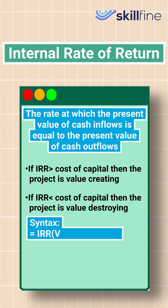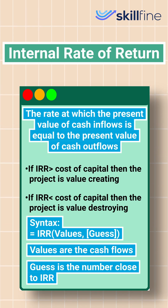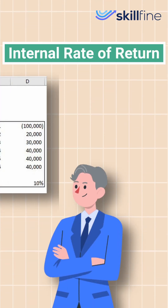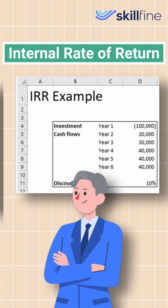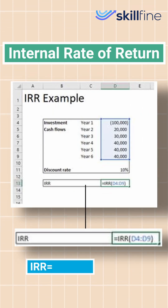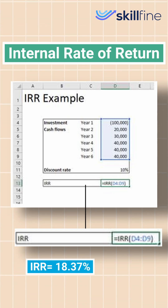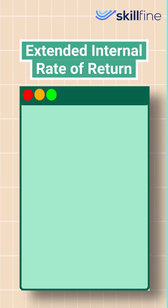We use the following syntax to calculate the IRR, where 'values' is the cash flow and 'guess' is the number close to the result of IRR. Looking at the example of Mr. X, who is considering the financial viability of an investment with the following cash flows, we apply this formula, which gives us an IRR of 18.37%. Since this is greater than the cost of capital of 10%, the project can be accepted.